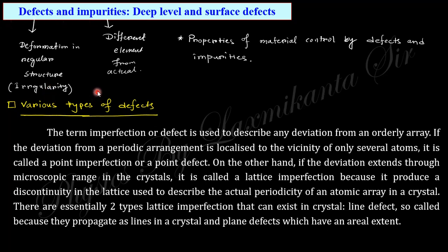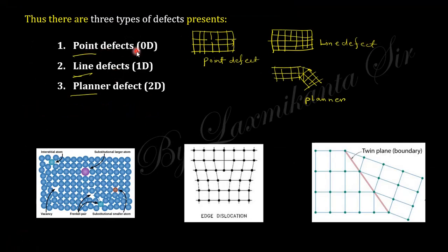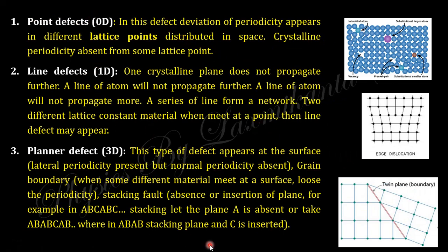Next are defects and impurities. Defects are irregularities in the crystal structure; impurities are different materials introduced into the regular lattice. There are three types of defects: point defects, line defects, and planar defects. In a regular structure, a point defect is a localized irregularity; a line defect is a missing line of atoms; and a planar defect is where one plane shifts into another orientation.